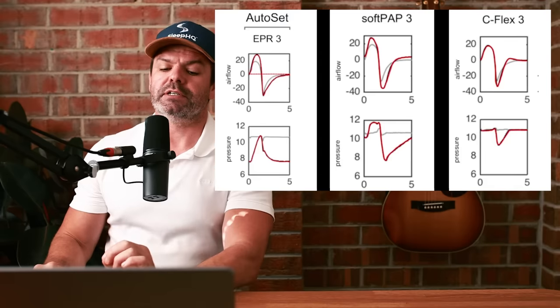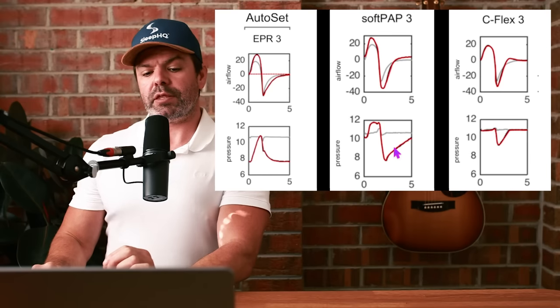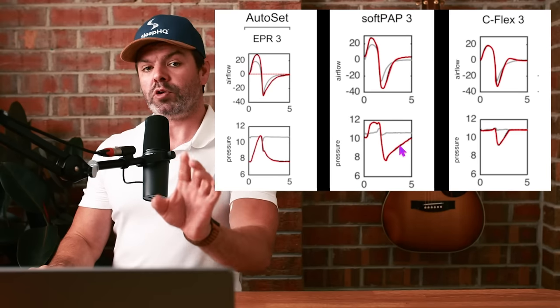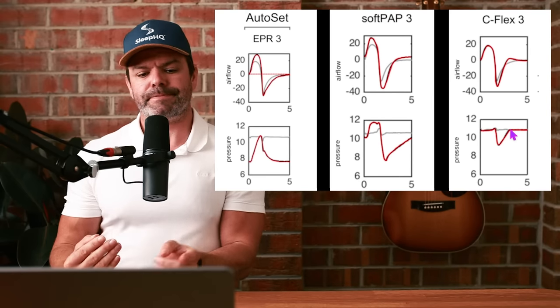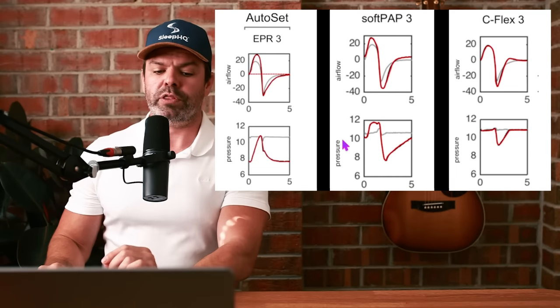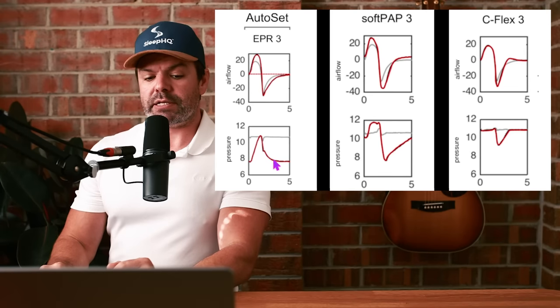What you guys need to understand right now, and it's super important, is apneas begin with the narrowing of the upper airway at the end of expiration. Yes, and then you breathe in and you get the respiratory effort and the ensuing collapse. But it's at the end of expiration when we first get the narrowing of the upper airway. Because of this, it's critical that the pressure returns to optimal levels prior to the beginning of inspiration.